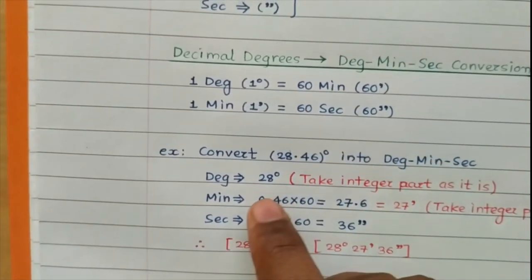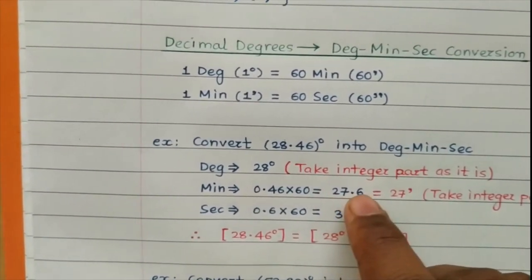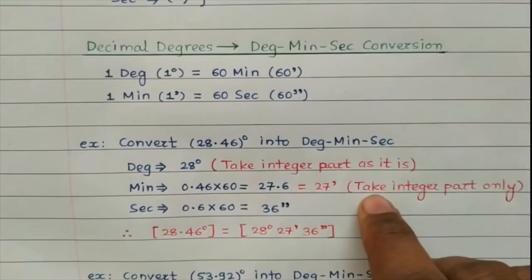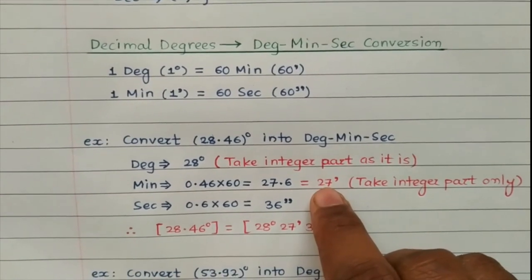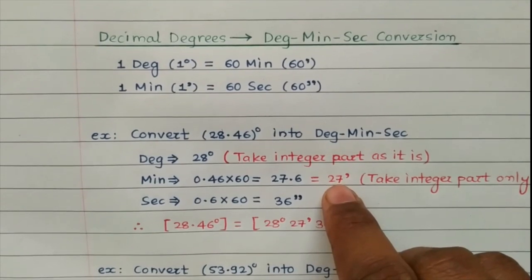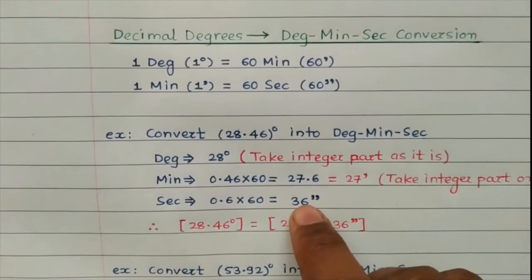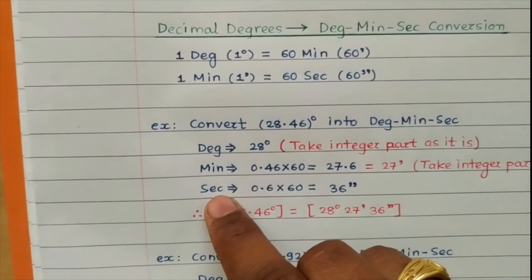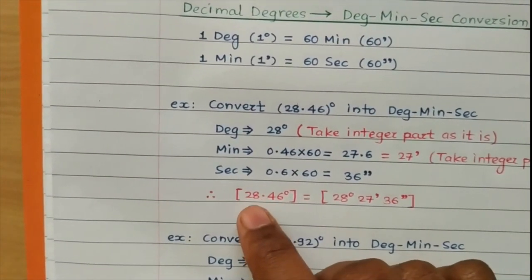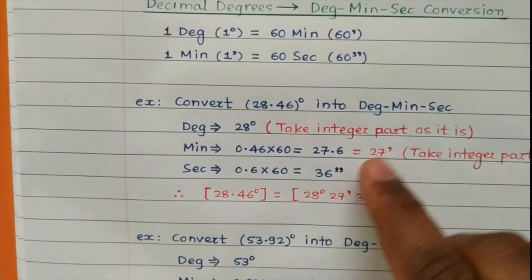0.46 degrees multiplied by 60 gives 27.6. Take only the integer part, which is 27 — that is 27 minutes. The remaining fractional part is 0.6. Multiply 0.6 by 60 and you get 36 — that is 36 seconds. So 28.46 degrees equals 28 degrees, 27 minutes and 36 seconds.